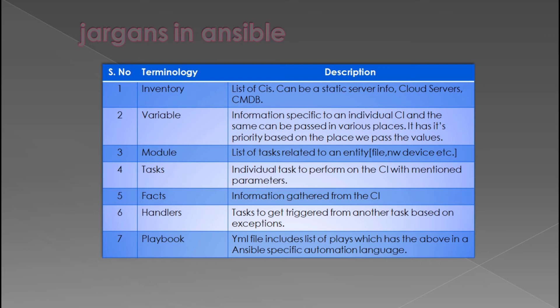A module can be included in other playbooks as well. A task is a sub-item of a module; a module can have multiple tasks with conditional parameters. Facts are variables gathered from endpoint devices. Handlers are like exception handlers — they get called when a specific condition is met. At the top level, a playbook is a plain YAML file that includes a list of plays, and each play can have a list of tasks.